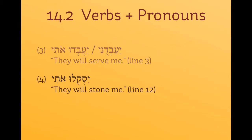Number four is another example. In line 12, the phrase 'they will stone me' could have been written with a yiqtol and object pronoun: yisqelu oti. But what you get is the attached pronoun going directly on the verbal form: yisqelu-ni — and again, the shuruq is written as a qibbuts.